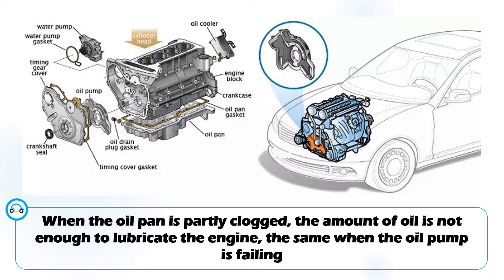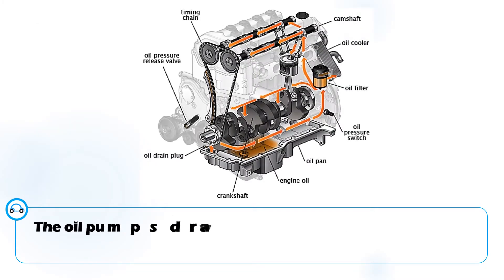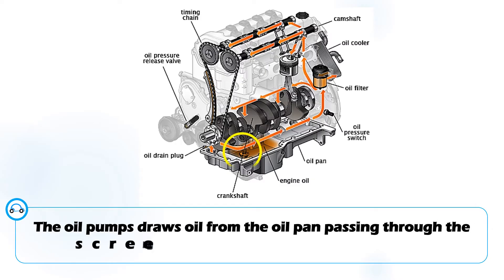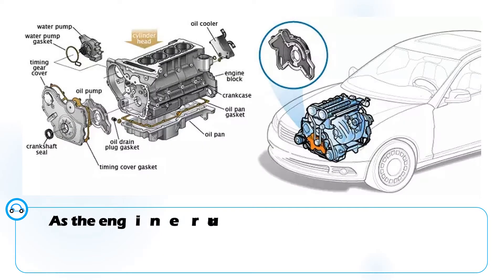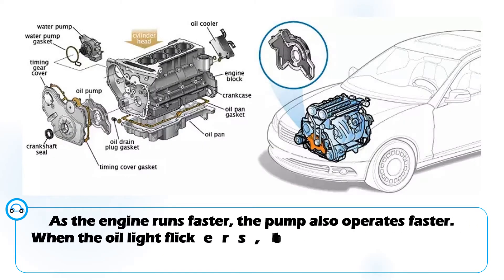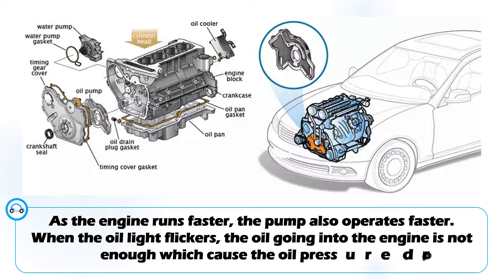The same applies when the oil pump is failing. The oil pump draws oil from the oil pan, passing through the screen and going into the engine to lubricate it. As the engine runs faster, the pump also operates faster. When the oil warning light flickers, it means that oil going into the engine is not enough, making the oil pressure inside the engine drop — which only happens when the oil pan screen is clogged or when the oil pump is failing.